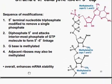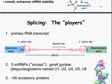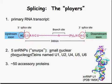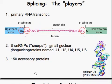Now let's go into splicing. At specific regions for splicing, there are a few major players involved. You have the primary RNA transcript, then 5 snRNPs — small nuclear ribonuclear proteins — named U1, U2, U4, U5, and U6, and then 50 or so accessory proteins as well.